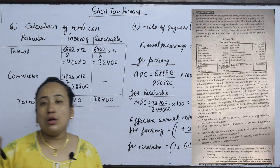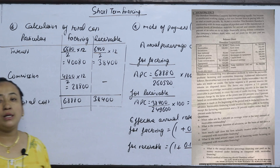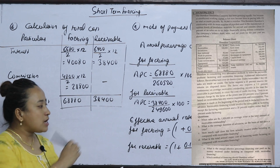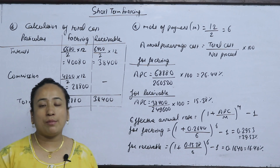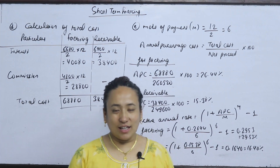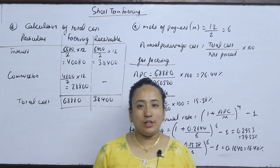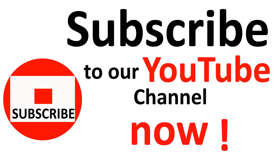The factoring cost is 29.53% and the receivable financing cost is 16.40%. Which method of financing should Sando utilize? The method with the minimum cost is preferred. Receivable financing is the better choice. Thank you.